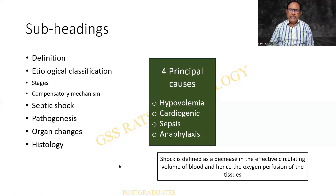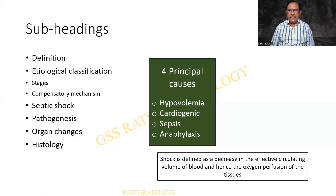By definition, shock is defined as a decrease in the effective circulating volume of blood and hence the oxygen perfusion to the tissues. Basically, there are four causes for shock: hypovolemia, cardiogenic, sepsis, and anaphylaxis.